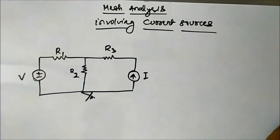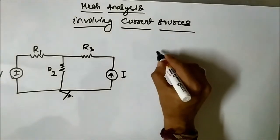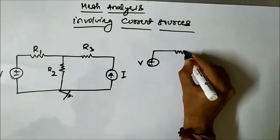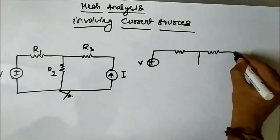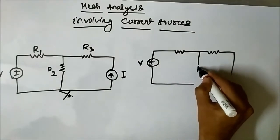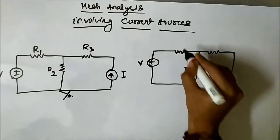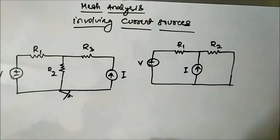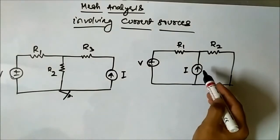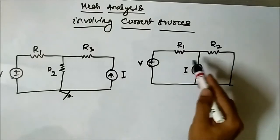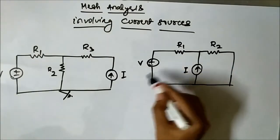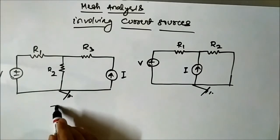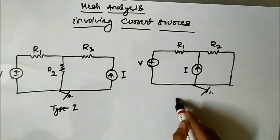Another way in which you may find circuits is where the current source is in-between — it does not belong specifically to any one mesh. It is common to both meshes. So this is Type 1, and this other configuration is Type 2.